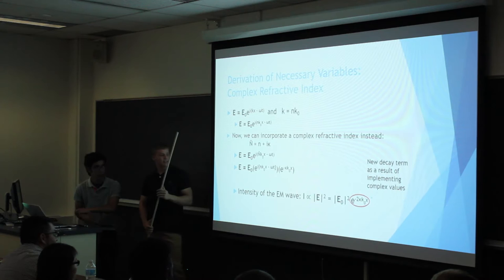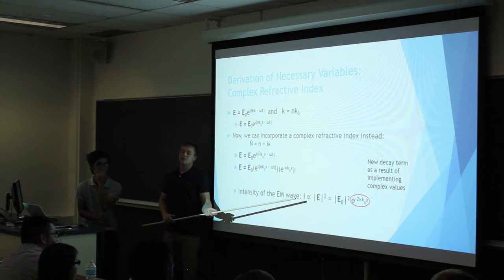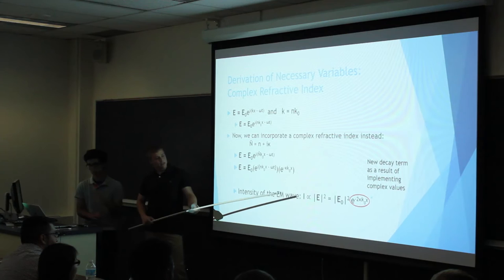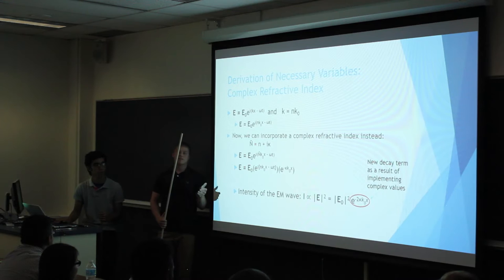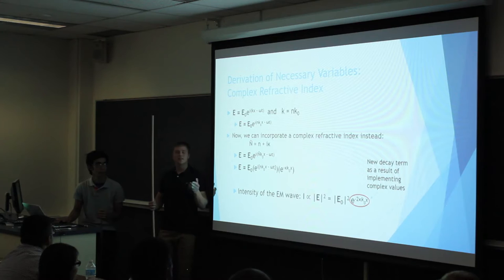Since we know that the intensity of the electromagnetic wave is related to the magnitude of the electric field, we end up with this relationship. This last term actually shows that there is a decay as the wave travels through a material. That's really why it's important that we use this complex refractive index, because without it, the theory would say the wave travels through a material without losing any energy infinitely, which we know is not true.